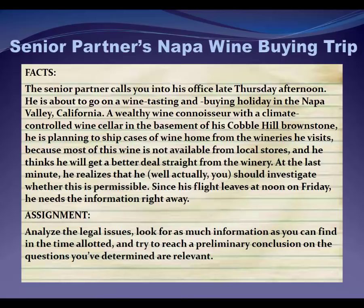He thinks he's going to get some great deals in Napa. But it suddenly occurs to him at the last minute — and it always does seem to occur to the partners at the last minute — that he wants to ship the wine home but he's not sure it's legal. That is, are private individuals even allowed to ship wine across state lines? He vaguely remembers something about some case or statute that said he either could or could not ship the wine. He tells you to look at the issue and give him legal guidance before he leaves. Can he ship cases of wine home to himself? Are there limitations? What law governs this — California, New York, federal law? And where do you find the answer — case law, statutes, regulations, or a combination of all three?